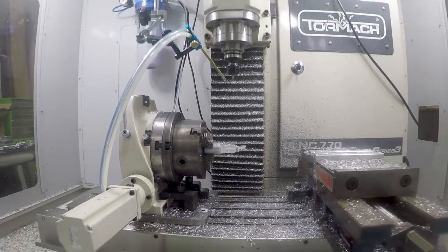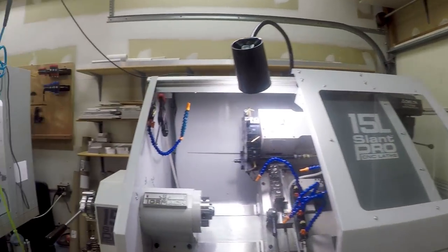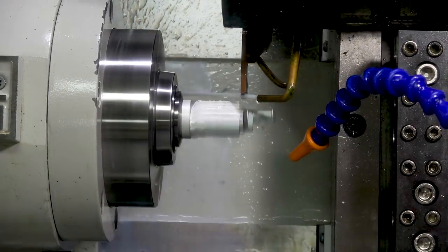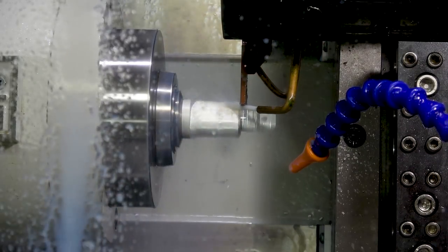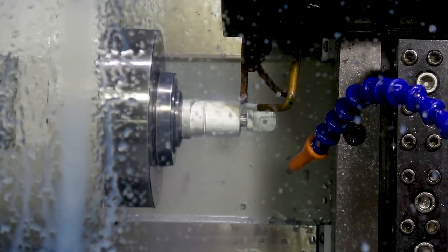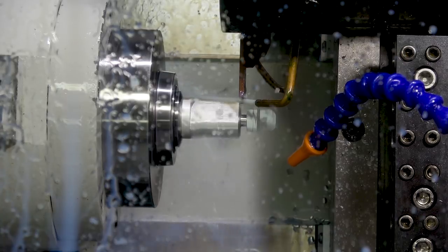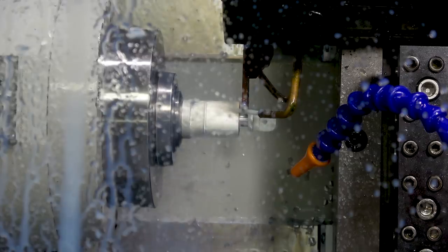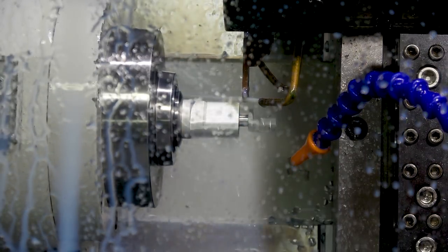Next, it's over to the lathe to machine the cylindrical section in the middle of the part. Here you can see one of the other advantages of beginning with cylindrical stock. If I had used rectangular stock, right now I'd be fiddling with a four-jaw chuck trying to get the part centered. But by using cylindrical stock, I can just slide it into a 5C collet and get right to work.